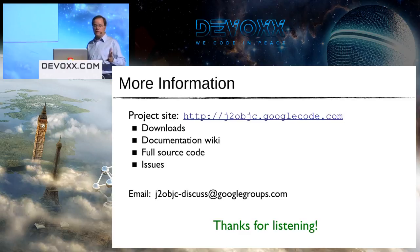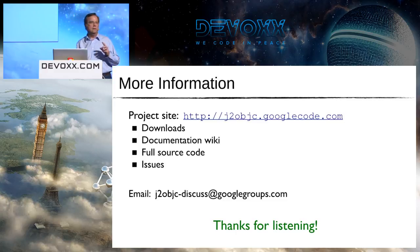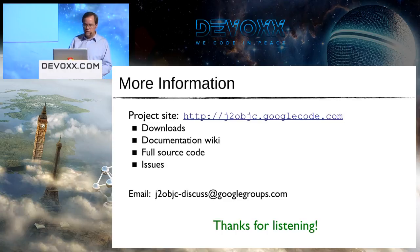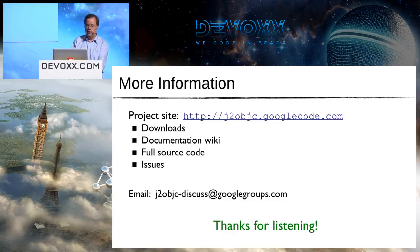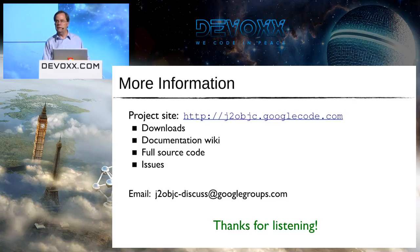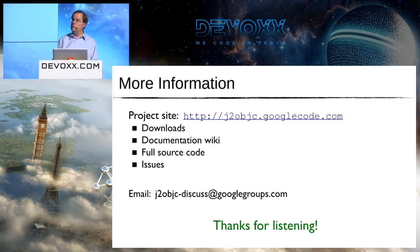For more information about the project, the project site is j2objc at googlecode.com. There you'll find downloads, a full wiki with all the documentation, full source code, and a list of all open issues. It's an open source project, so just download the source, build it, and have fun with it. The email address for questions and discussions is j2objc-discuss at Google Groups. If you remember nothing else, it's j2objc at googlecode.com. Thank you very much for listening.